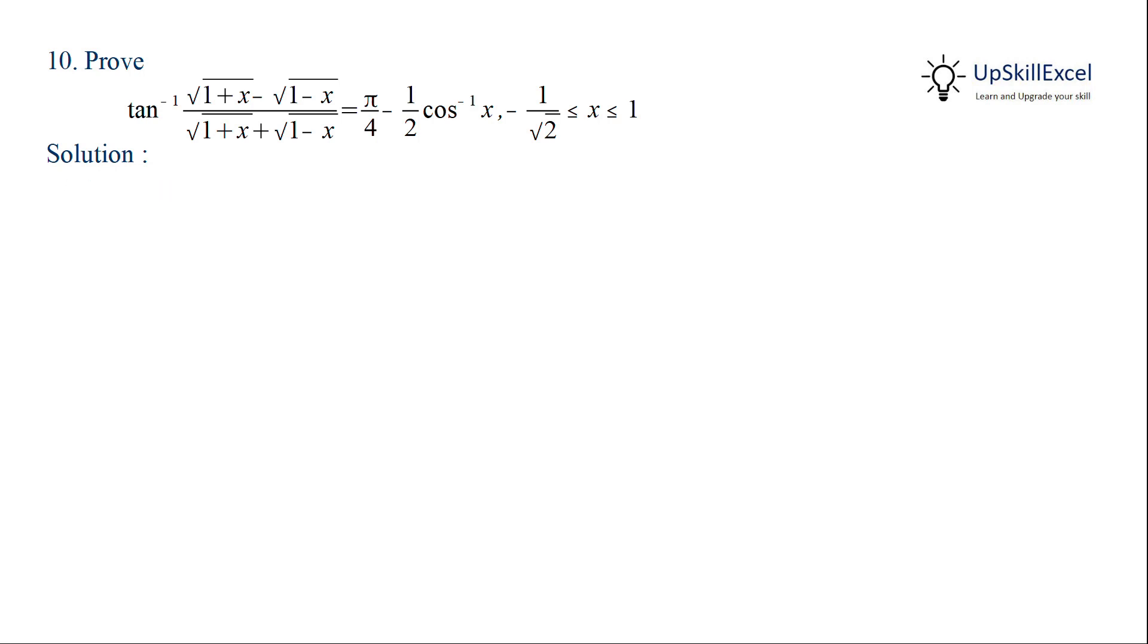We start by assuming x is equal to cos 2 theta. We know that cos 3 pi by 4 is equal to minus 1 by root 2 and cos 0 is equal to 1.